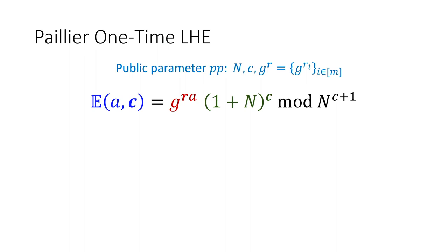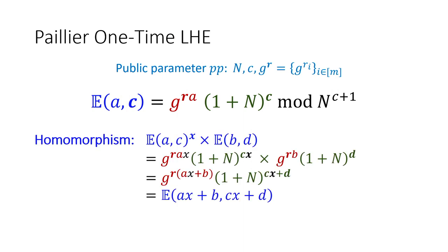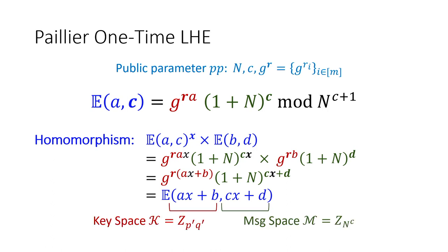Applying this idea, we get a simple LHE scheme where the secret key A is a secret exponent in the hard group, and we encode the message in the easy subgroup. Since both key and message are in the exponent, we have the desired homomorphism. The message space is Z modulo n^c, but the key space is Z modulo p'q', and they are not equal. Effectively, the evaluator needs to recover the key ax + b computed over Z.